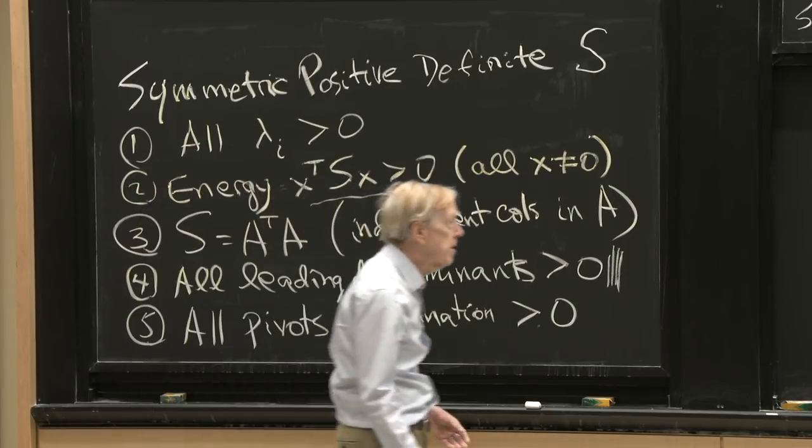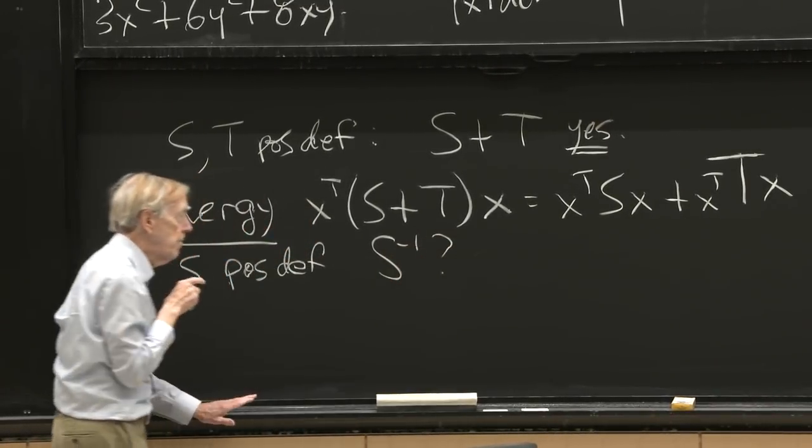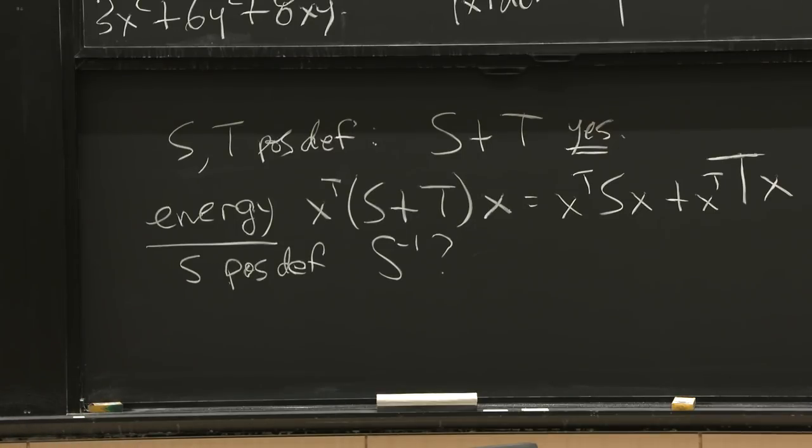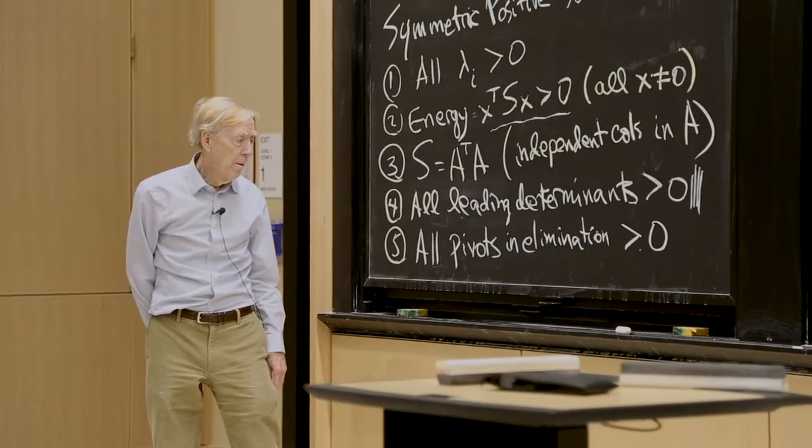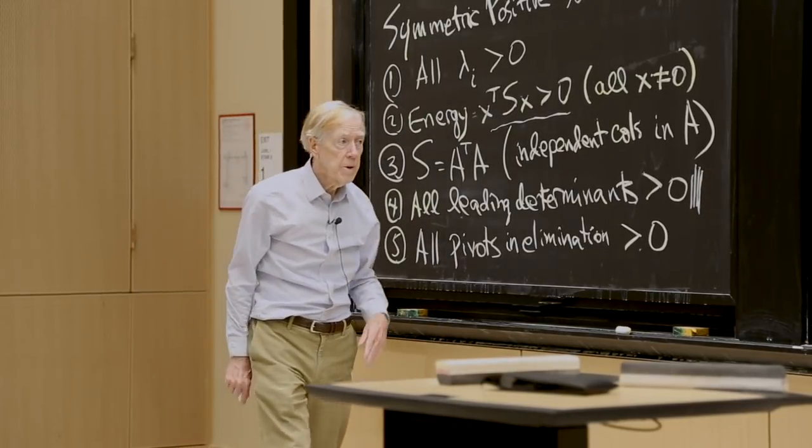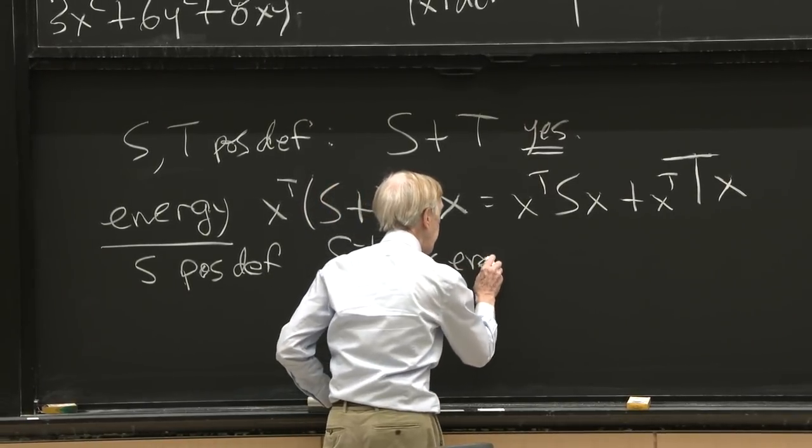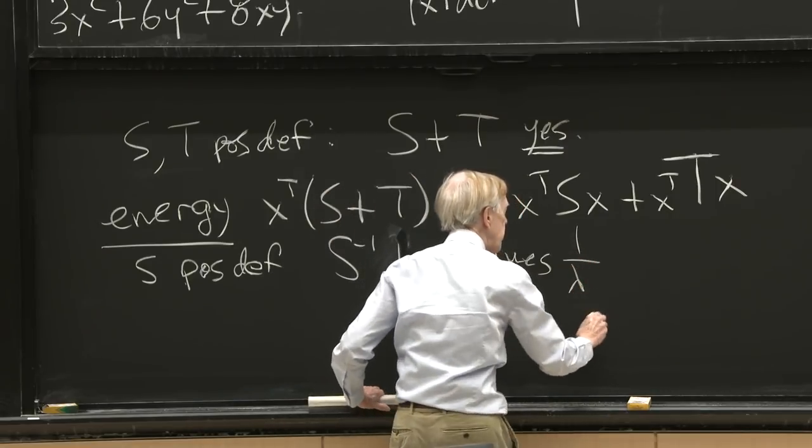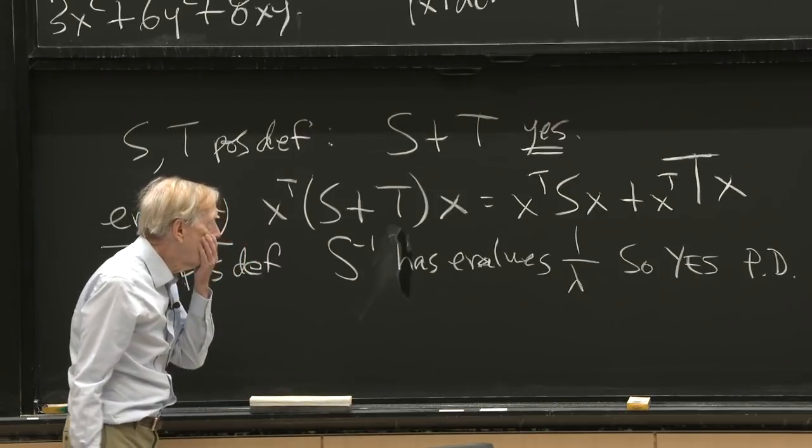You see how the energy just was right. I don't want to compute the pivots or any determinants. That would be like a nightmare trying to find the determinants for S plus T. But this one just does it immediately. What else would be a good example to start with? What about S inverse? Is that positive definite? So let me ask S positive definite. And I want to ask about its inverse. So its inverse is a symmetric matrix. And is it positive definite? And the answer, yes. I've got five tests, 20% chance of picking the right one. Determinants not good. The first one is great. The first one is the good one for this question, because the eigenvalue, so the answer is yes. This has eigenvalues. So what are the eigenvalues of S inverse? 1 over lambda. So yes, positive definite, positive definite.